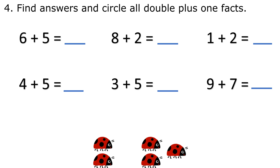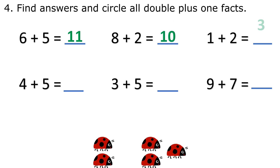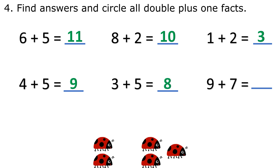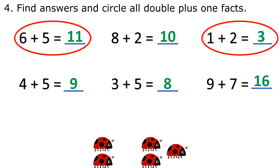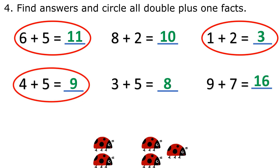Question 5: Find answers and circle all double plus one facts. 6 plus 5 equals 11. 8 plus 2 equals 10. 1 plus 2 equals 3. 4 plus 5 equals 9. 3 plus 5 equals 8. 9 plus 7 equals 16. Double plus 1 facts are: 6 plus 5 equals 11, 1 plus 2 equals 3, 4 plus 5 equals 9.